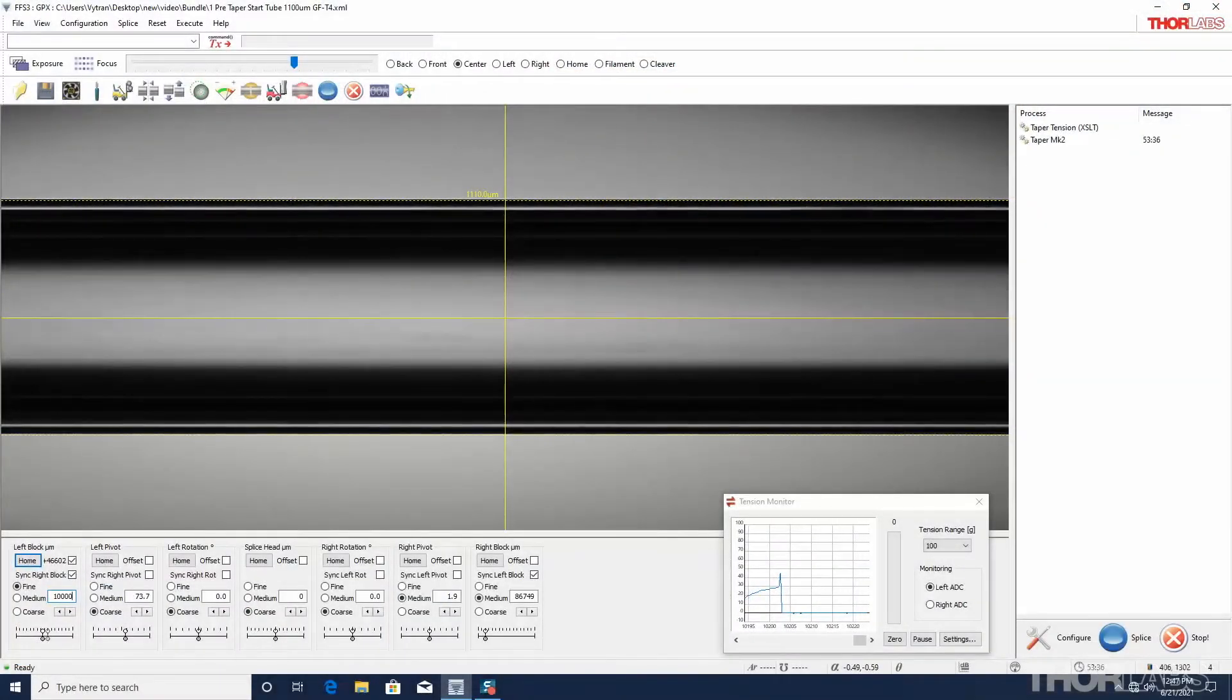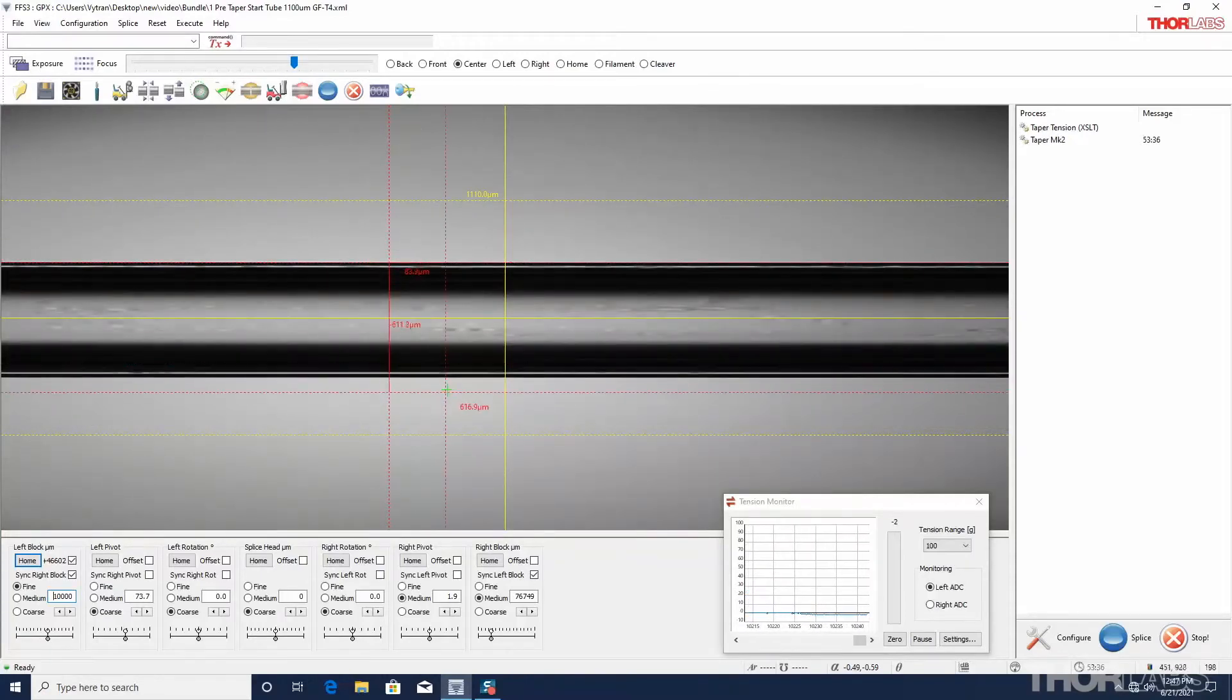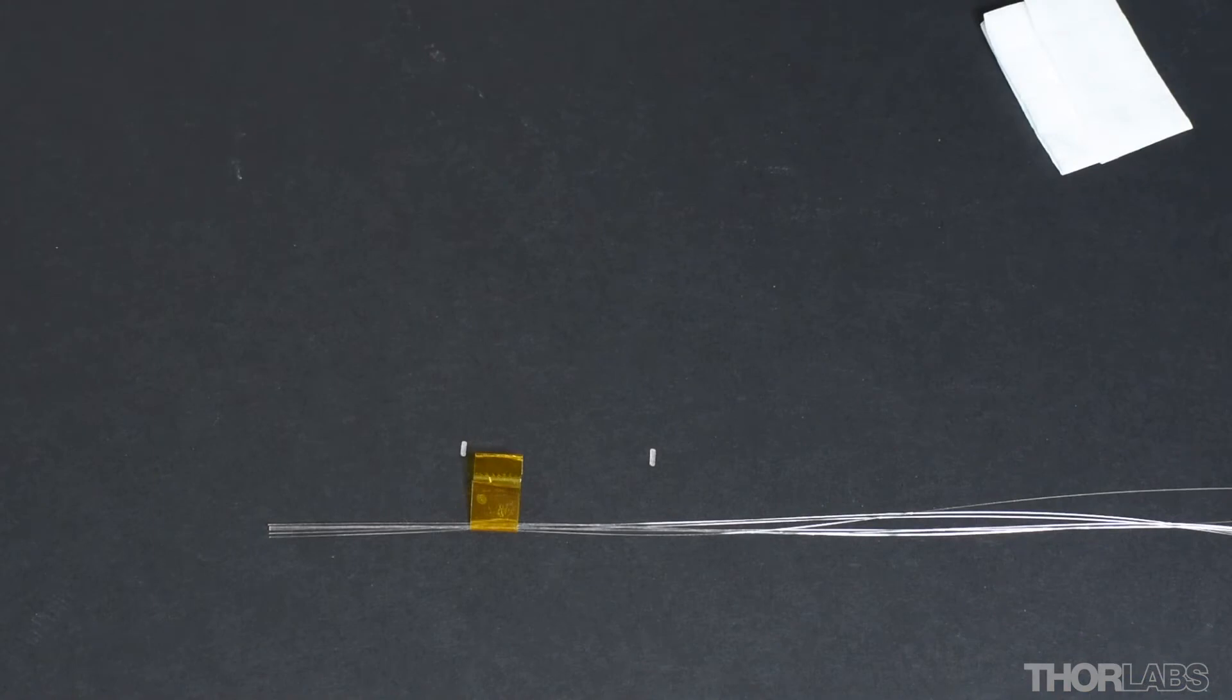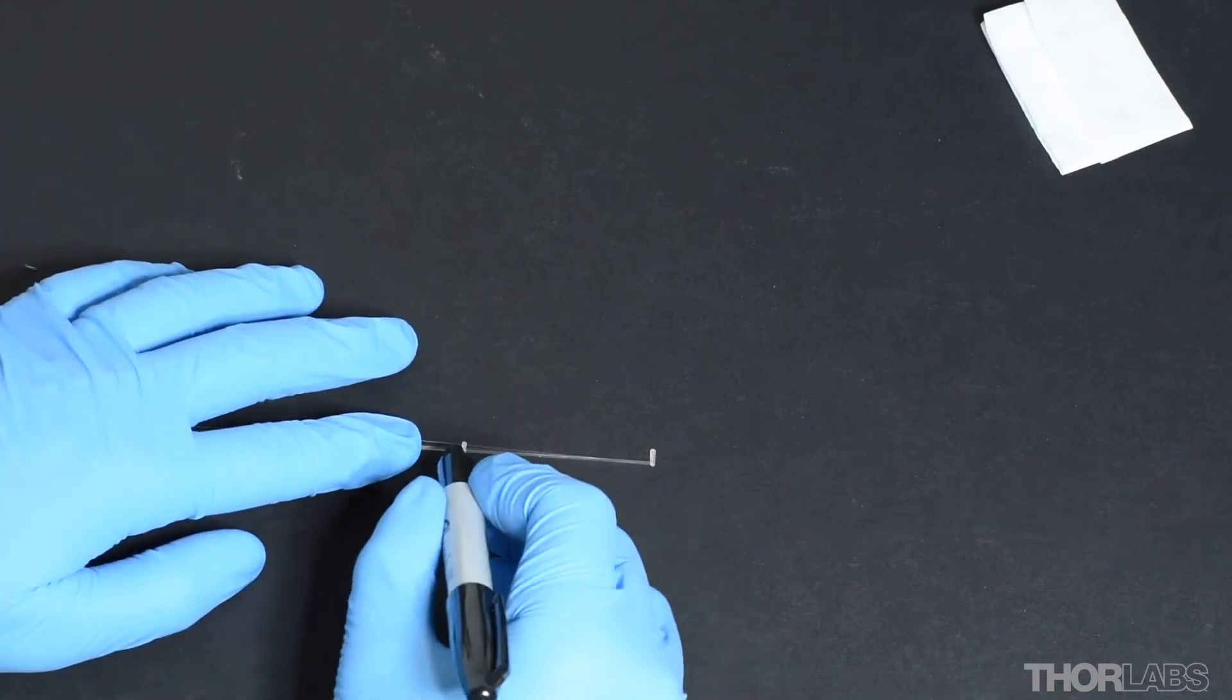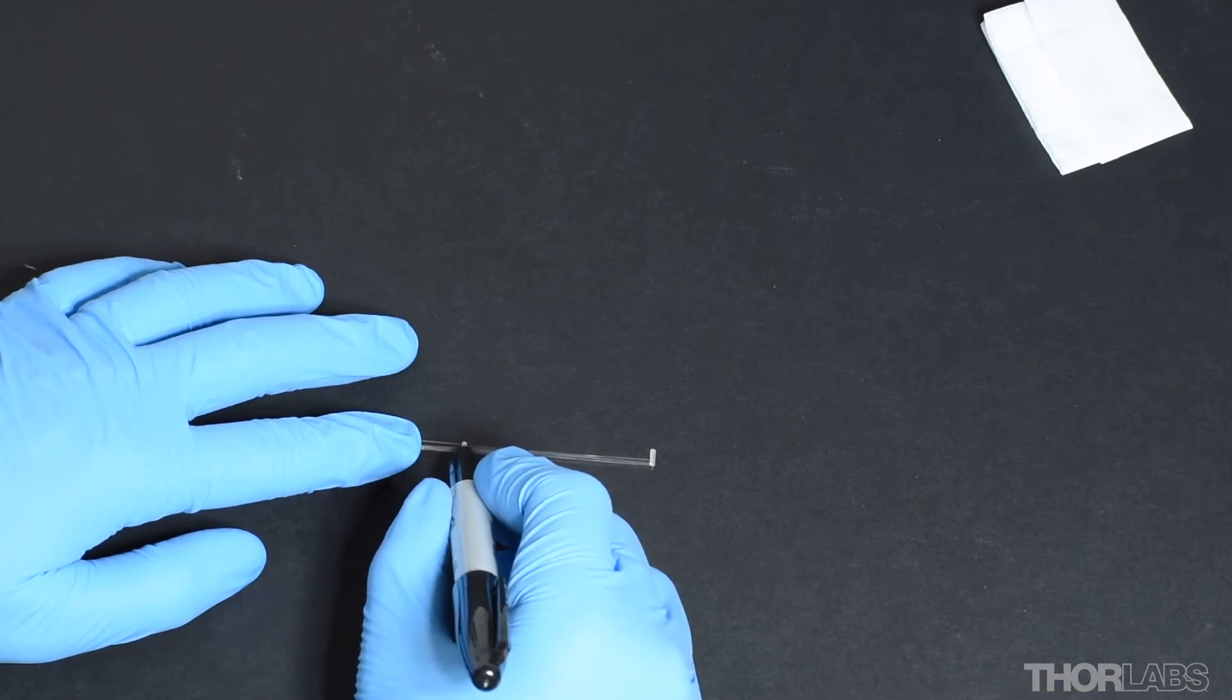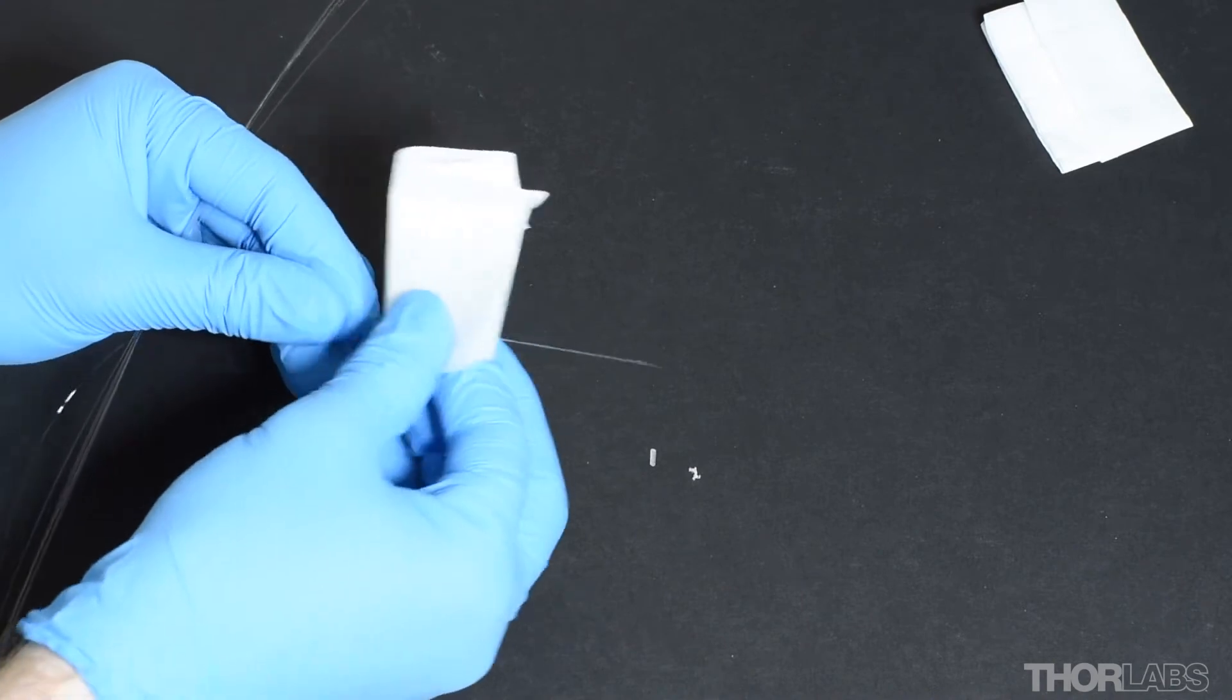Once the pre-taper has completed, the fibers can be prepared for bundling. The fibers can be taped together to maintain relative position. Mark the appropriate strip length on all fibers. Then, each fiber is stripped and cleaned.